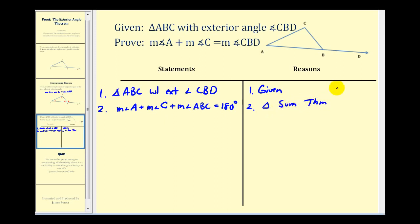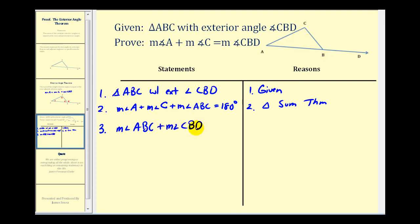Notice how we had to identify angle B by using three vertices because there are two angles located at vertex B. We also know the measure of angle ABC plus the measure of angle CBD is equal to 180 degrees, by the definition of a linear pair of angles.